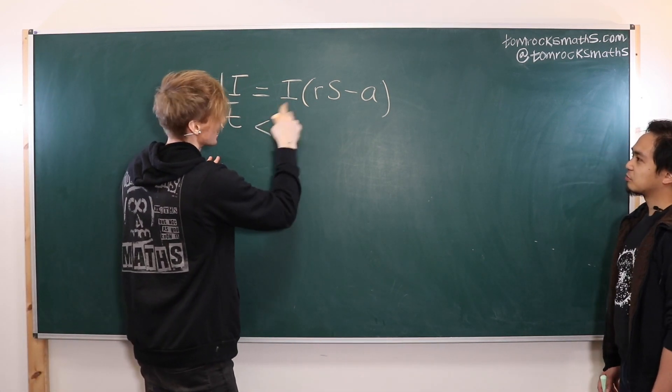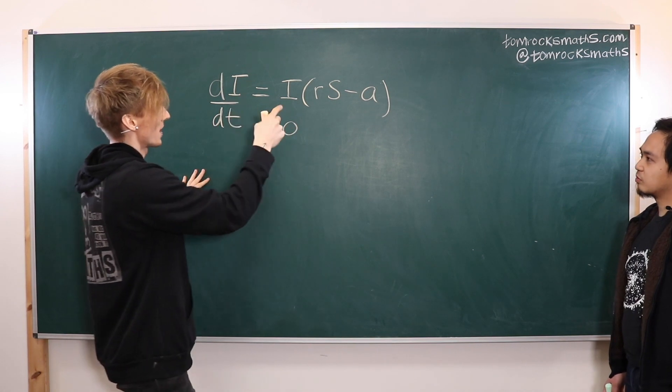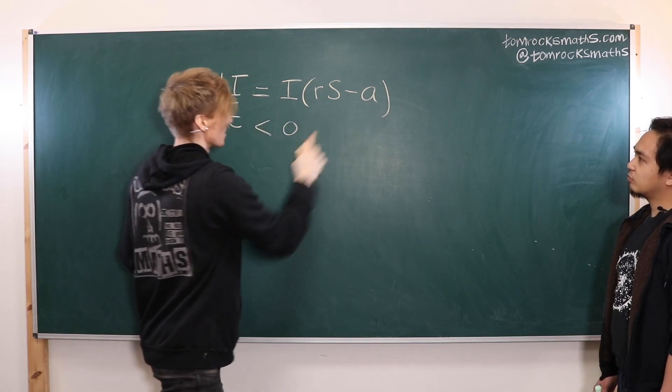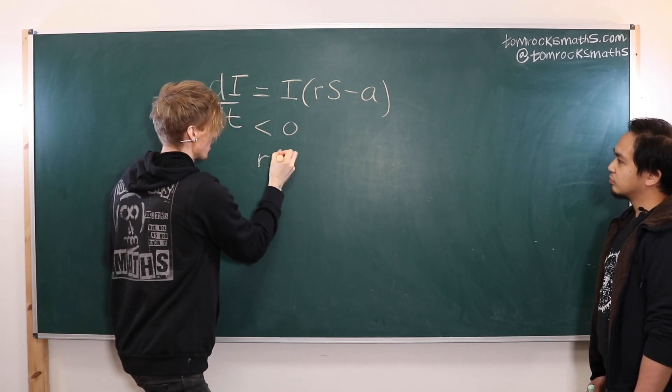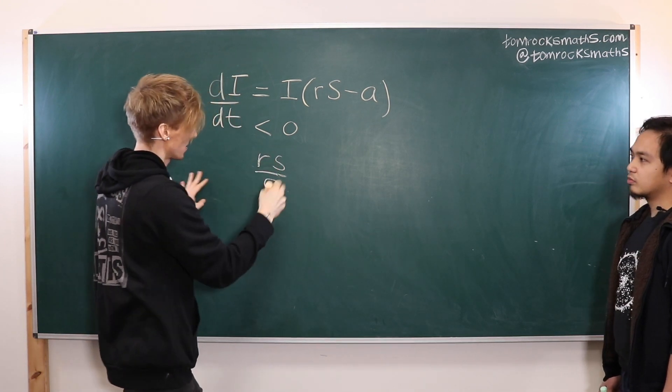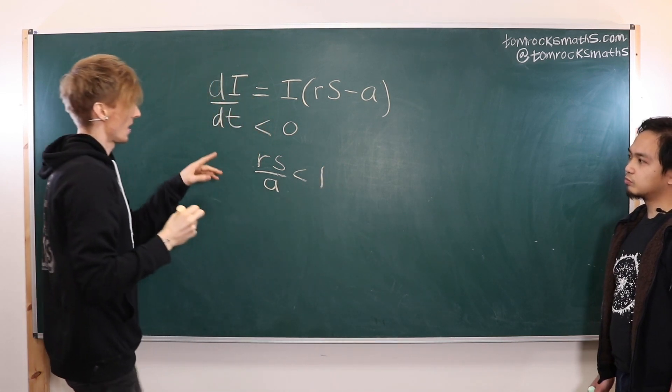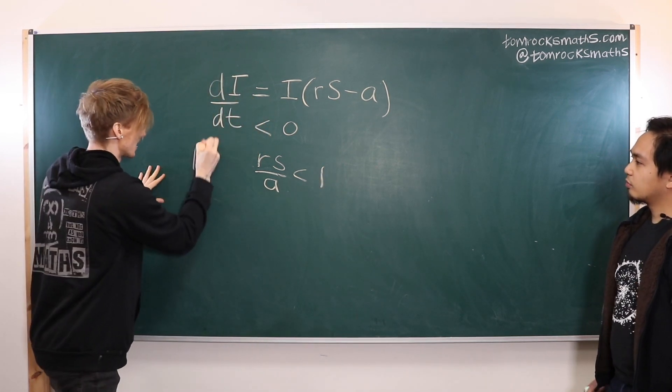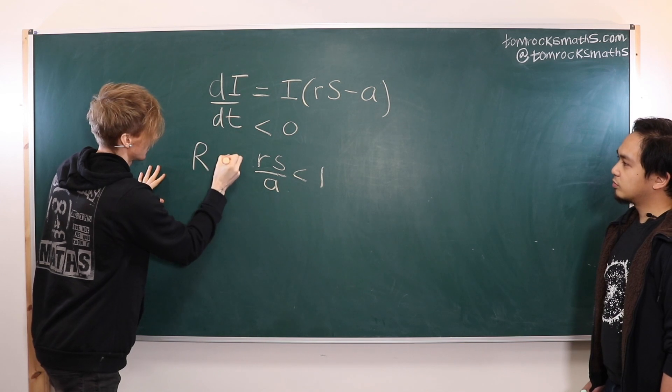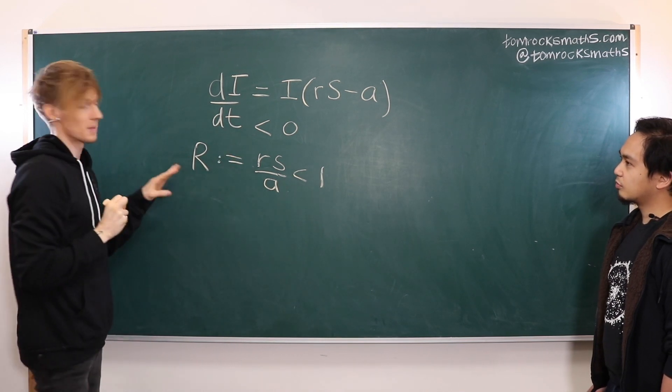So for that to be negative we found that means this thing must be negative which we arranged to give us rs over a was less than one and then we defined this to be this parameter capital R.